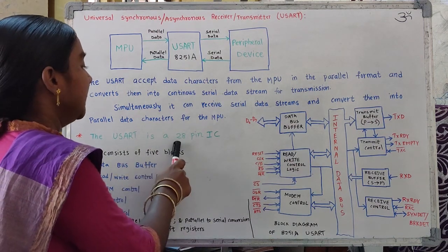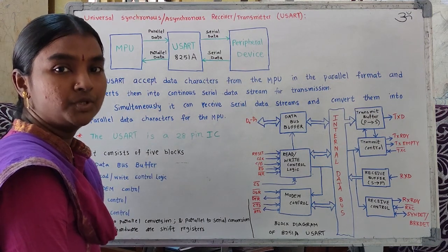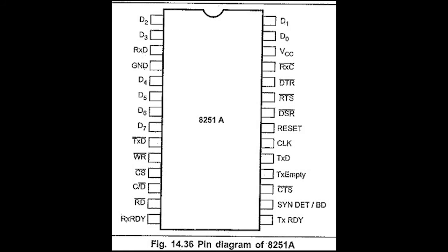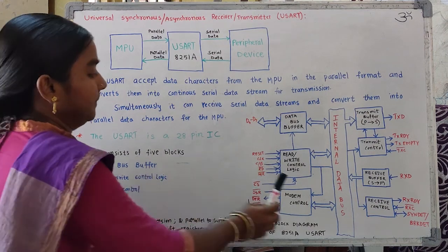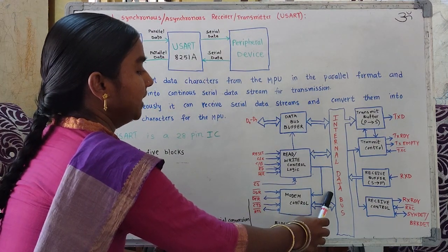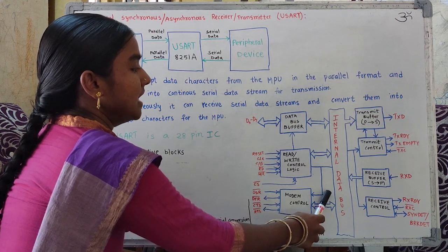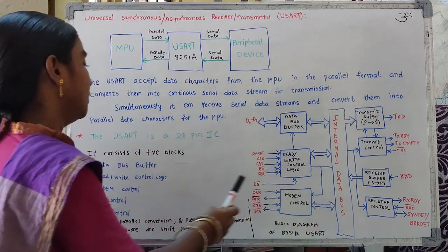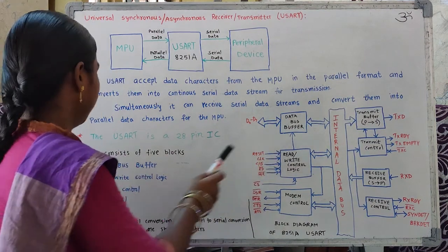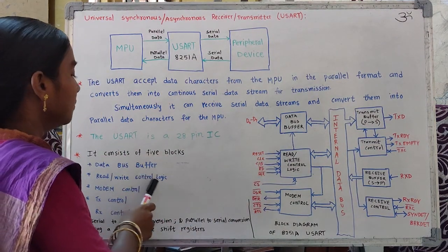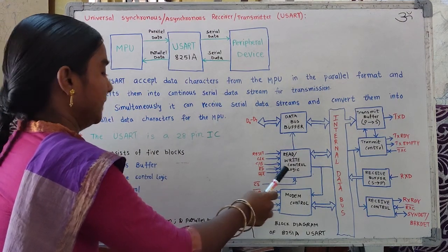The USART is a 28-pin IC. This block diagram of 8251A USART consists of five blocks. The first is the data bus buffer block. The second is the read or write control logic block.